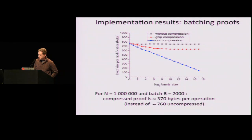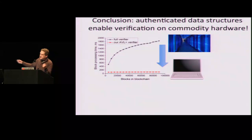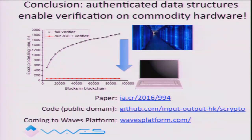To conclude, you can go down from expensive machines to cheap machines if you allow yourself to use authenticated data structures. In the paper there's a simulation showing the time per block to process it: the black line is what happens when you go to external key-value storage on hard drive or SSD, and the red line is what happens when you do hashes instead, verifying our proofs. The paper's on ePrint. There's code — it's public domain, CC0 license, do with it whatever you want. It will be incorporated into the Waves platform, which is an actual multi-token cryptocurrency. Thank you.